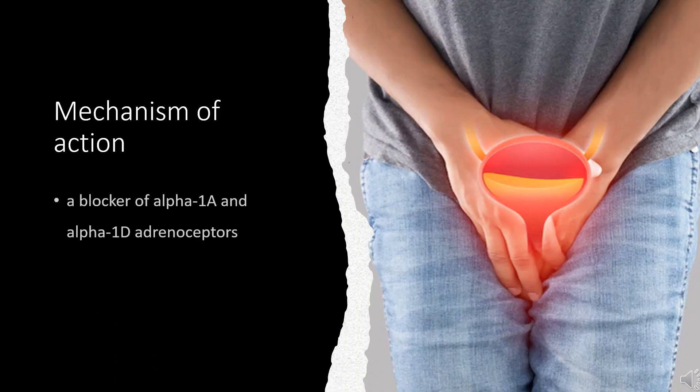Mechanism of action: alpha-adrenergic receptors are essential for the regulation of blood pressure in humans. Two types of alpha receptors — alpha-1 and alpha-2 — both play a role in regulating blood pressure. Alpha-1 receptors are post-synaptic, located after the nerve junction or between a nerve fiber and target tissue. In this case, the target tissue is the vascular smooth muscle. These receptors, when activated, increase blood pressure.